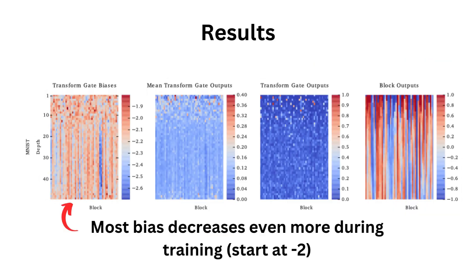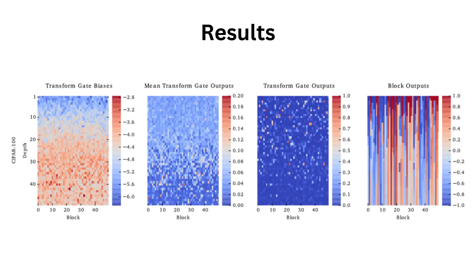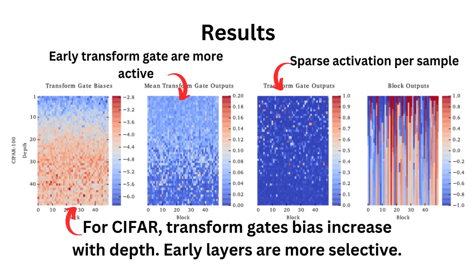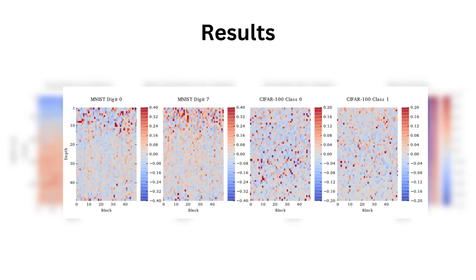In a nutshell, for MNIST, we can see that most of the biases are decreasing even further than the start of the training procedure, since it starts at minus 2. The CIFAR 100 data show us a few extra things: that the early gates are usually more active, that there is sparse activation per sample, the transform gate bias increases for CIFAR with depth, meaning that the early layers are way more selective. And finally, the mean transform gate output per class is different across classes and when compared to the mean transform gate for the whole training sample.